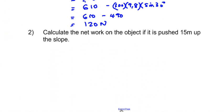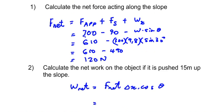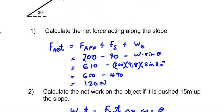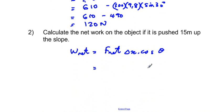The next question says: calculate the net work on the object if it is pushed 15 meters up the slope. Net work equals F_net × Δx × cosθ. Since we already calculated the net force in part one, we can use that result directly as a shortcut.